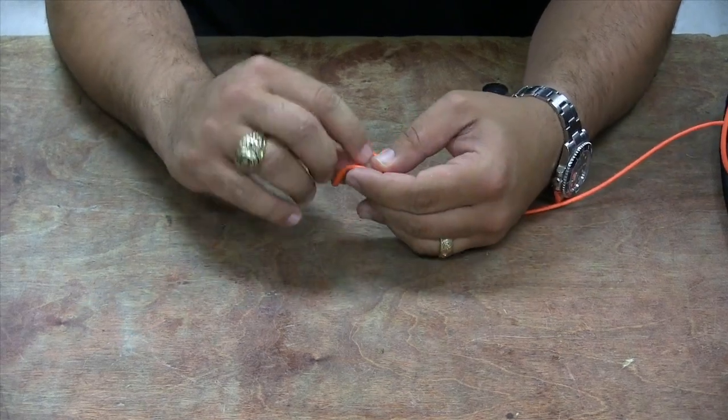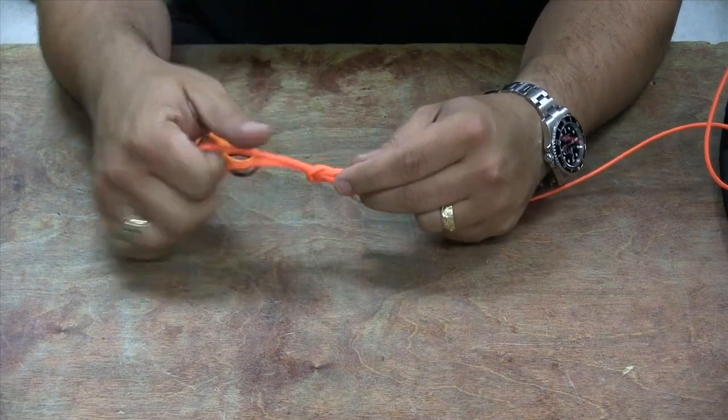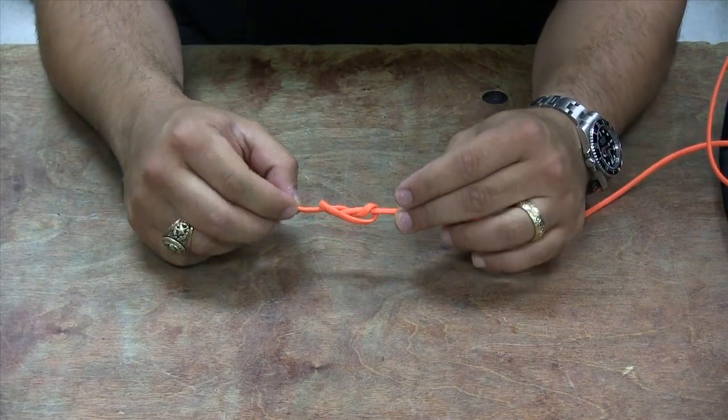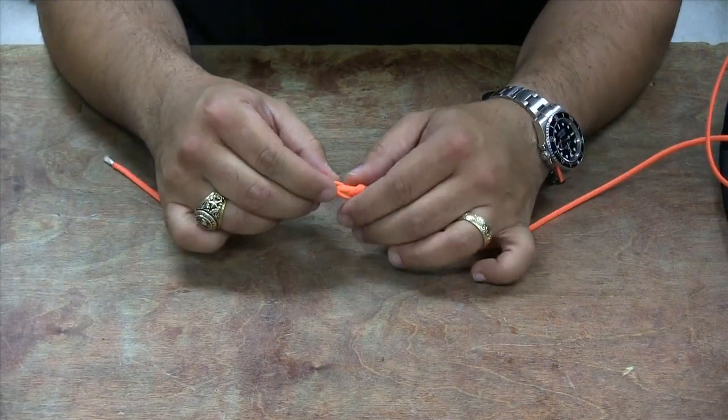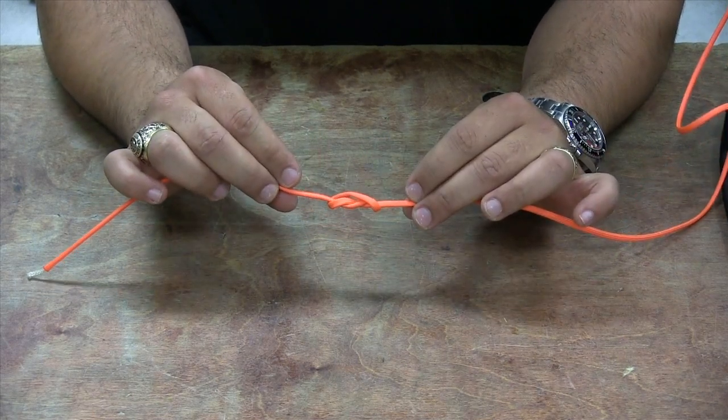go through once, go through twice, and start cinching this down until it rolls over and forms a figure 8. You don't want to go any tighter than that yet.